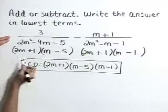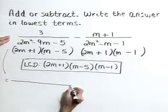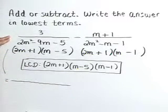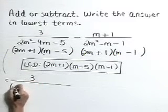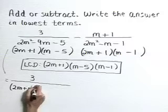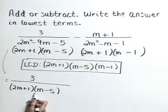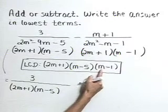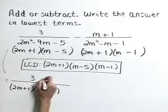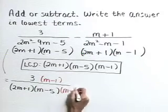Now let's go back to our difference. We want to build each of these fractions up so that they have that lowest common denominator. So in our first fraction, let's leave those denominators in their factored form for ease. As we compare this denominator to our LCD, we see that it's missing the m minus 1 term. So let's multiply both the numerator and denominator by m minus 1.